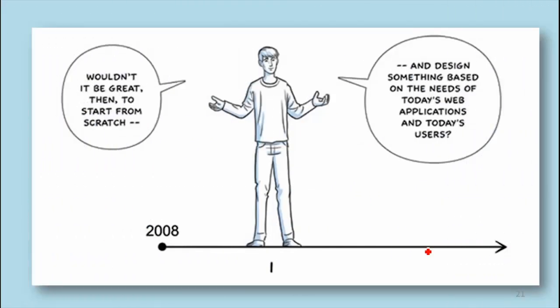This leads to a design where you need one process to manage everything, with separate processes for each tab. Turning Firefox into a multi-process browser is still a big challenge — it's not easy to take a browser designed as a single-process browser and make it multi-process. Chrome talked about starting from scratch and designing a browser based around the capabilities of machines in 2008 and the greater need for security and robustness.